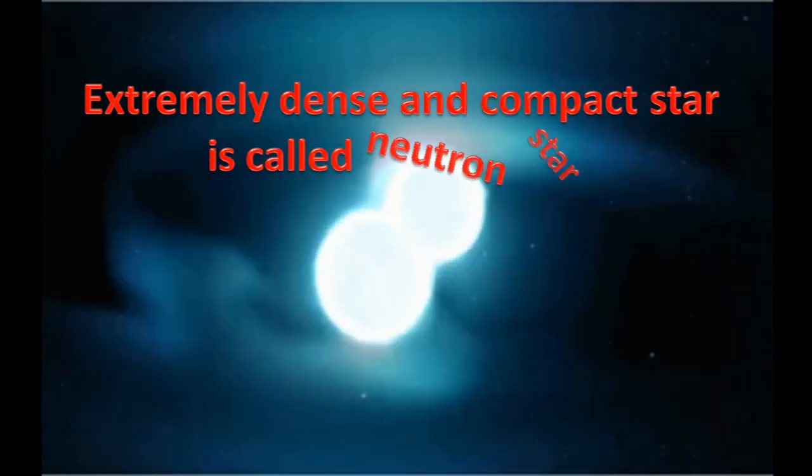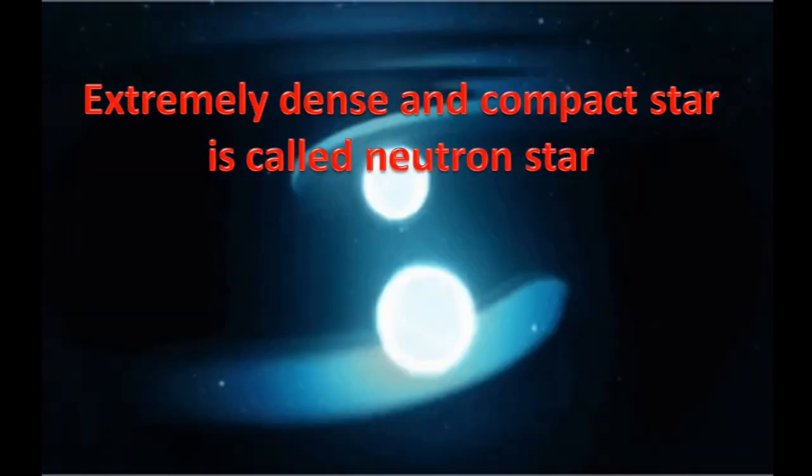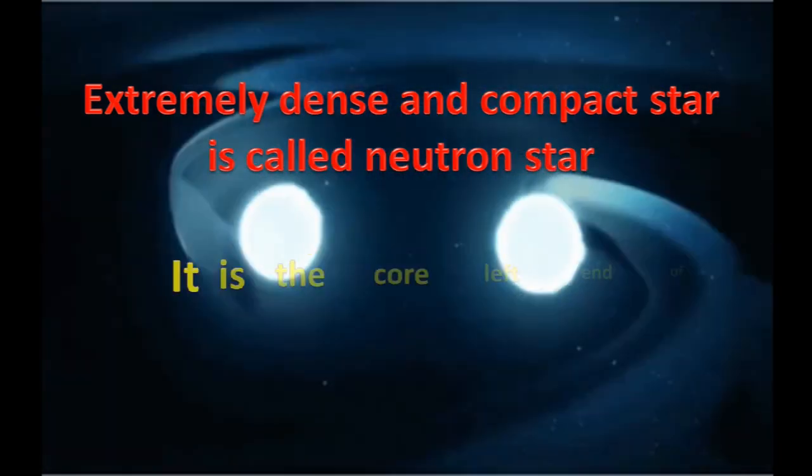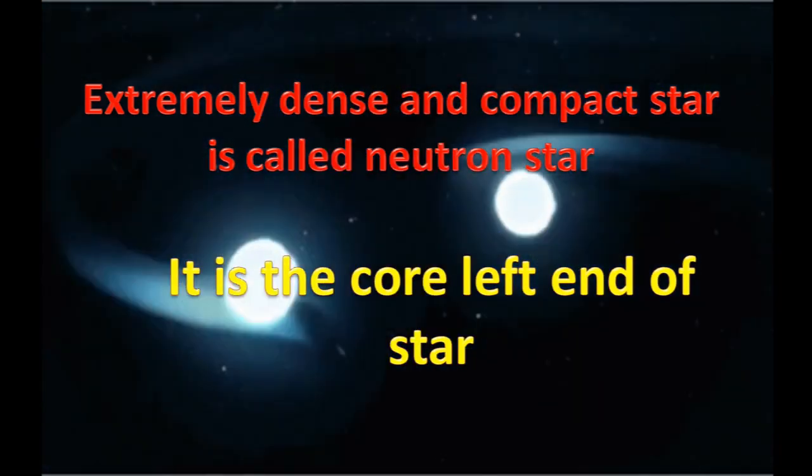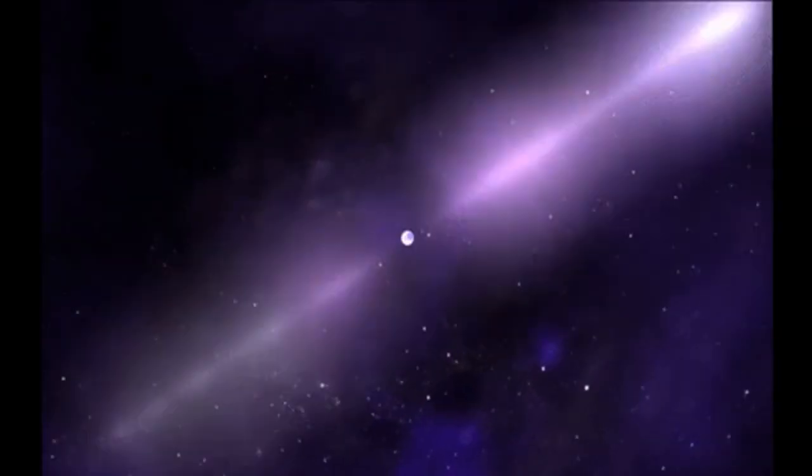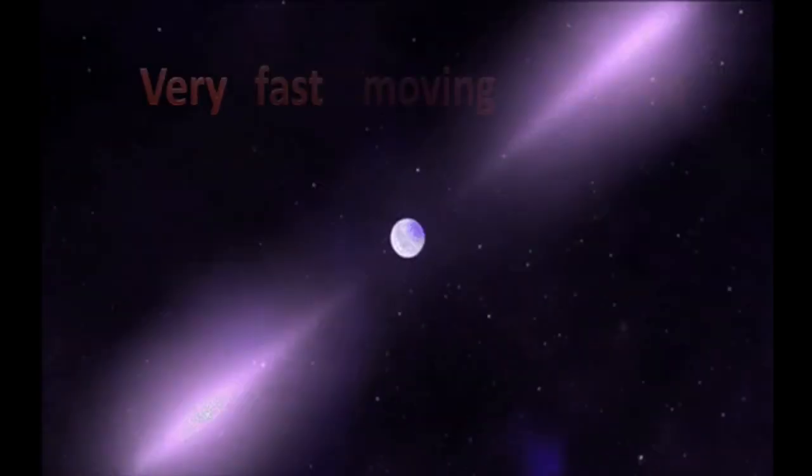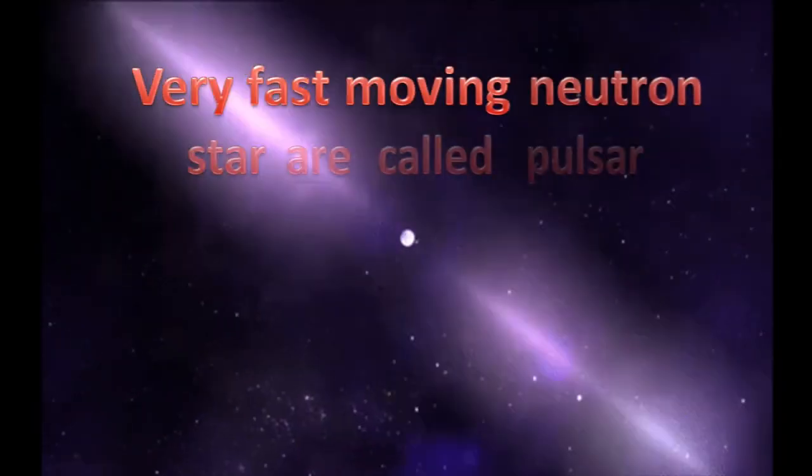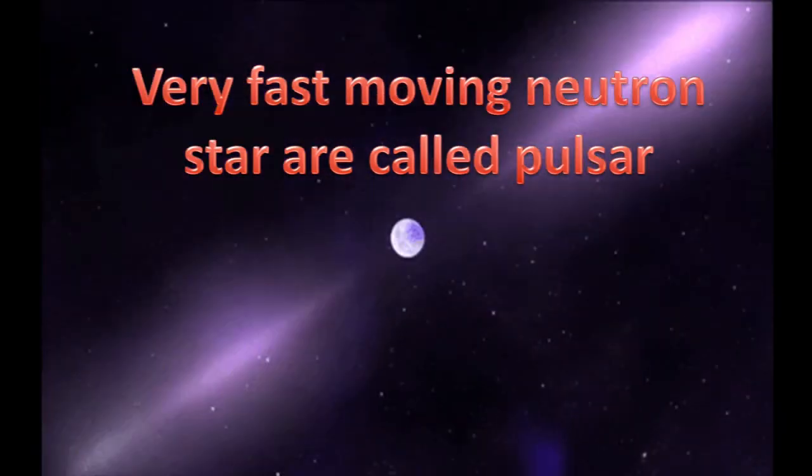Extremely dense and compact star is called a neutron star. It is the core left at the end of a star. Very fast moving neutron star is called a pulsar.